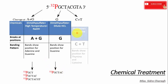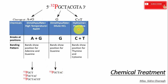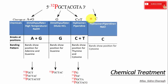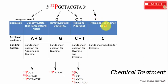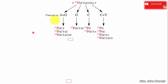Chemical treatment with hydrazine and piperidine results in breaks at C and T positions, producing four different fragments. If the single-stranded DNA is treated with hydrazine, piperidine, and NaCl, breaks are created only at the C position, resulting in two different fragments.